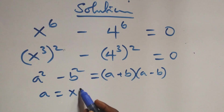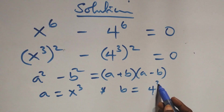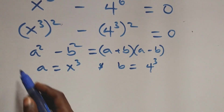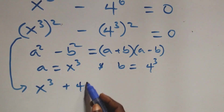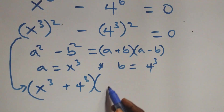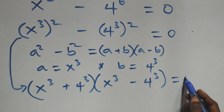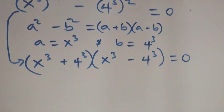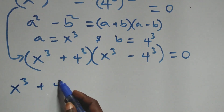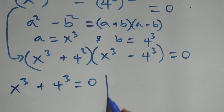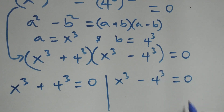Here a is taken as x raised to the power three and b is taken as four raised to the power three. This becomes x raised to the power three plus four raised to the power three, in brackets, times x raised to the power three minus four raised to the power three, in brackets, equals to zero. And here we have two possible cases: first, x raised to the power three plus four raised to the power three equals to zero, or x raised to the power three minus four raised to the power three equals to zero.